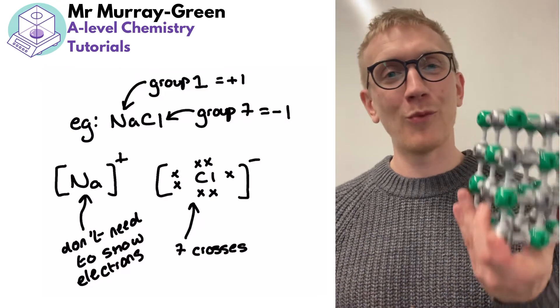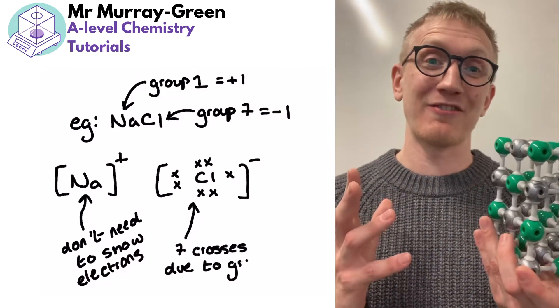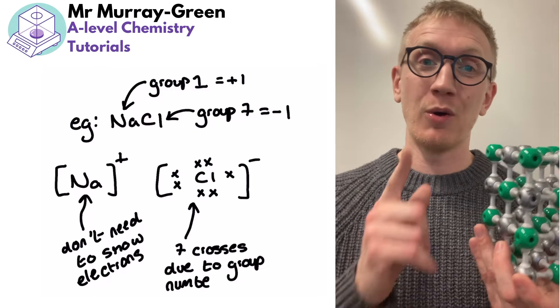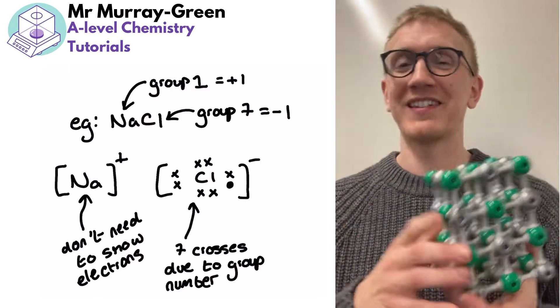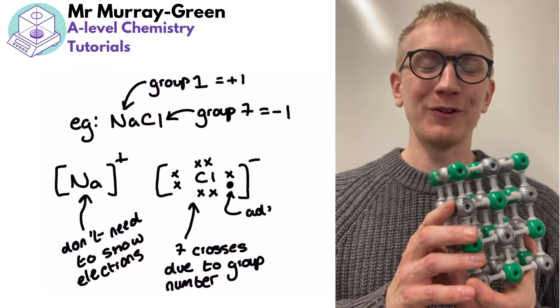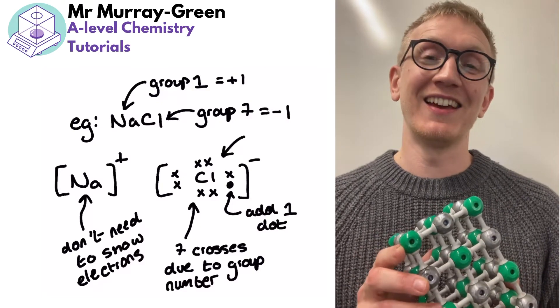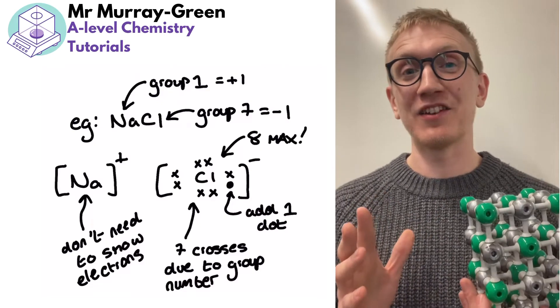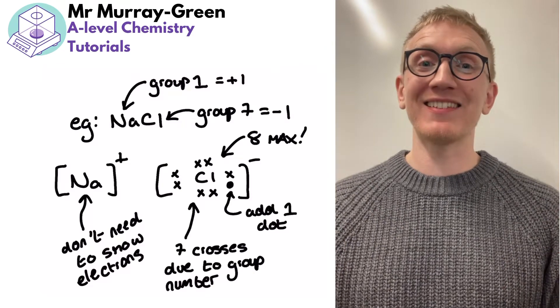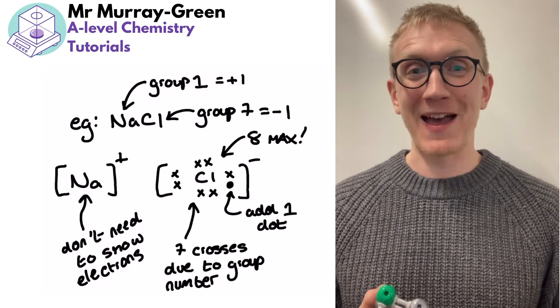So for example if this was an NaCl dot and cross diagram I would just need to show one Na plus and one Cl minus. But at A-level your dot and cross diagrams can get a little bit more complicated. So let's review some of the tips we need to know and the extension we can make to these in order to make us best prepared for the exam.